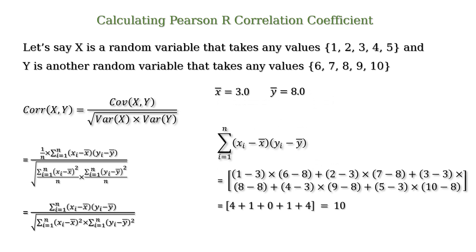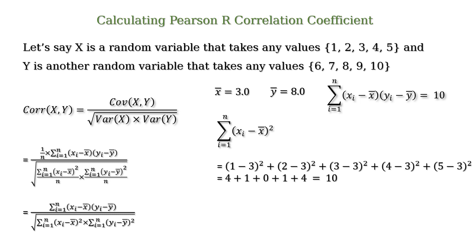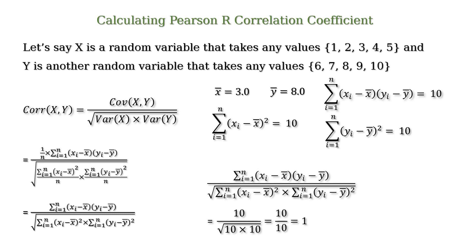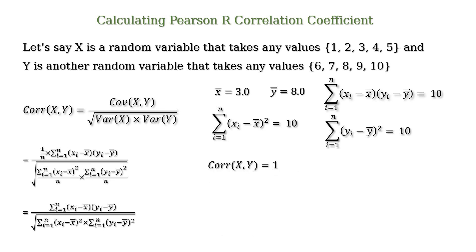The numerator, summation from i equal to 1 to n of (xi minus x-bar) into (yi minus y-bar), equals 10 after calculation. Similarly, we can calculate the denominator. The summation from i equal to 1 to n of (xi minus x-bar) squared equals 10 after calculation, and the summation from i equal to 1 to n of (yi minus y-bar) squared equals 10 after calculation. Therefore, the Pearson R correlation coefficient between x and y is 1. Hence, x and y are perfectly positively correlated.